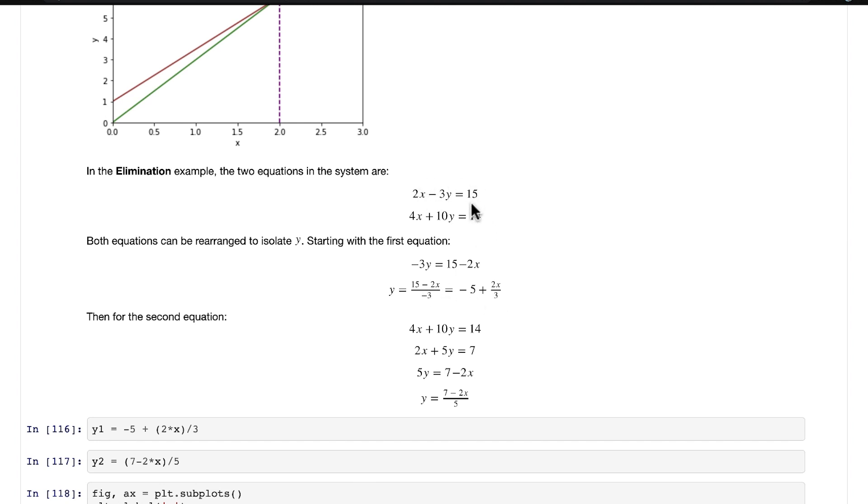For the second equation, to isolate y, let's redraw the equation here. The first thing that I noticed is that we can divide by 2 to simplify a bit. So 4x/2 is 2x, 10y/2 is 5y, 14/2 is 7. Then we can rearrange to isolate for y.